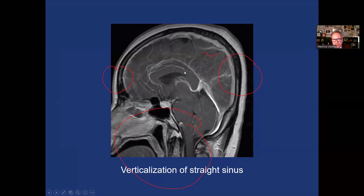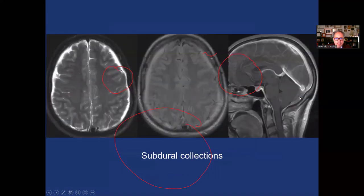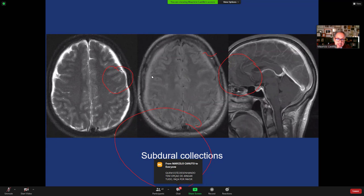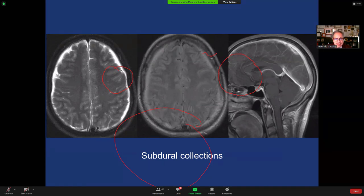Here is another patient with verticalization of the straight sinus — you can see it looks more vertical than it should. Again all other findings of intracranial hypotension are present, including lack of visualization of the third ventricle with downward herniation, very narrow interpeduncular cistern, prominence of the pituitary gland, effacement of the ventral aspect of the pons, reduced prepontine cistern, and significant dural and venous structure enhancement. Subdural collections are also seen — bright on FLAIR — representing another compensatory mechanism to fill the space left by lack of CSF.